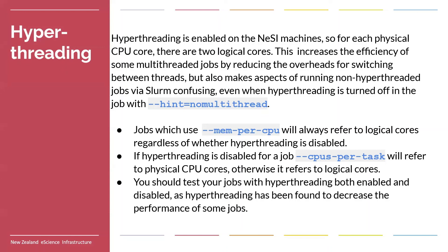That is where hyperthreading comes in. The CPUs on the NISI platforms are hyperthreaded, meaning that for each CPU there are two hardware threads rather than the standard one hardware thread of a normal CPU. Having two hardware threads does not mean the CPU can do twice as many calculations — that work is done by the CPU itself, not the hardware threads. What it means is that a CPU can have two threads loaded onto it at once. It can still only do the calculations of one thread at a time, but when the running thread stalls, rather than kicking off the thread and loading a new one, it can just switch to the other hardware thread. The switching between hardware threads has a much lower computational overhead, meaning you get the benefits of oversubscribing CPUs with significantly reduced downsides.